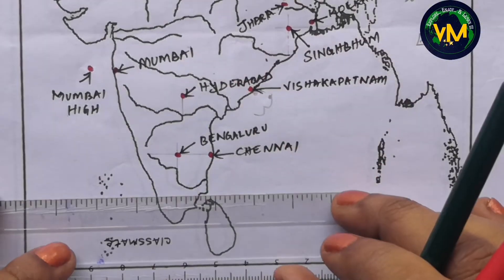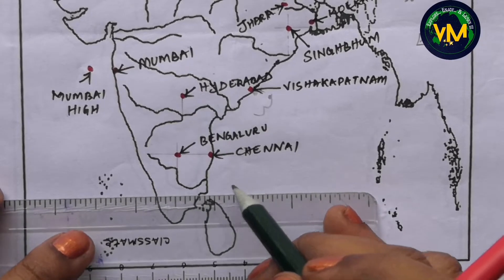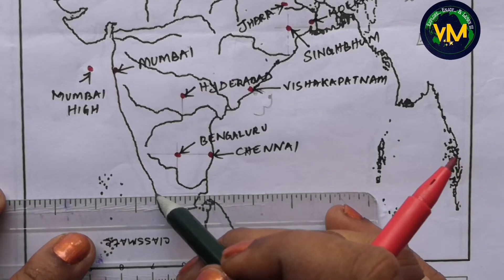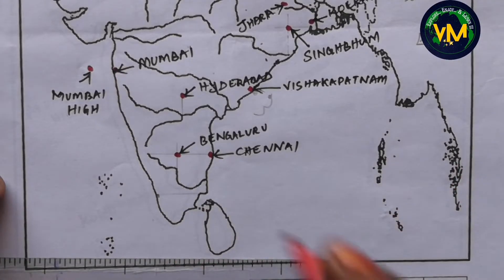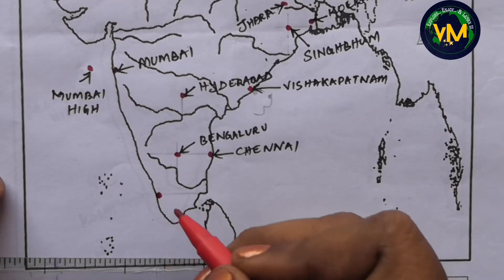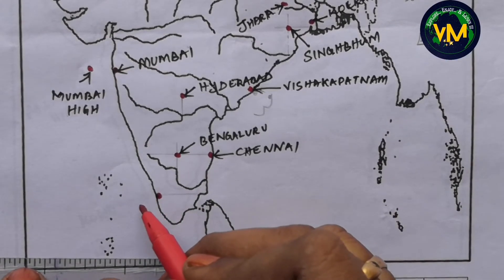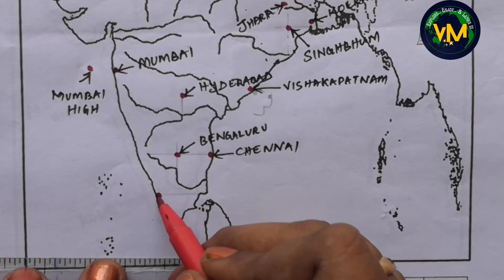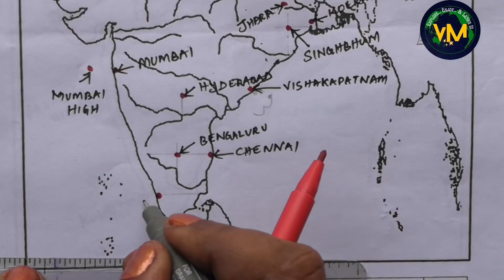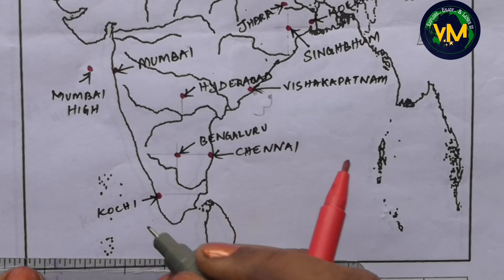Finally we come to Kochi. Just below Kaveri there is a horizontal line. From that horizontal line, draw a straight line using your scale — where it touches the west coast, this is Kochi. Again, draw it inside the land and not inside the Arabian Sea. Whenever you draw a port city, make sure you touch the coast but don't draw it inside the sea.